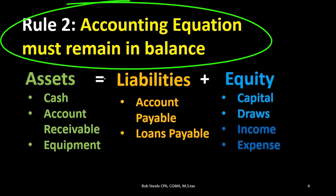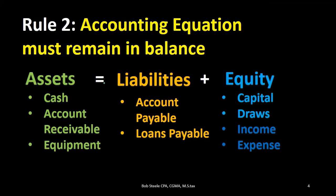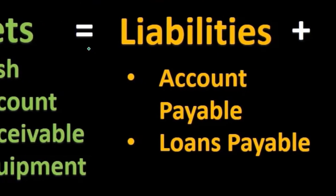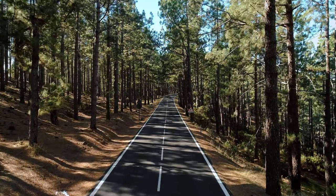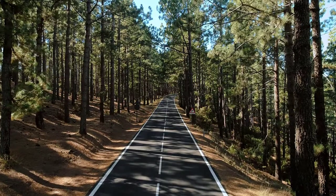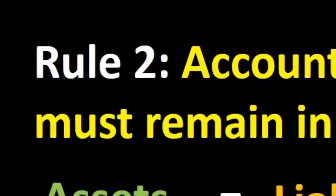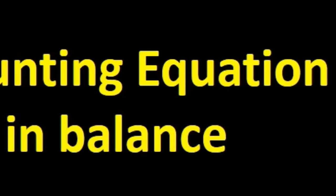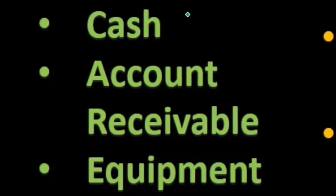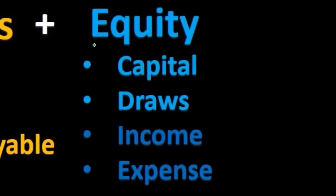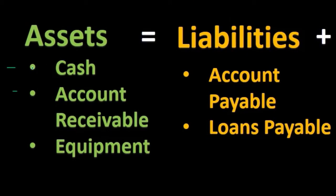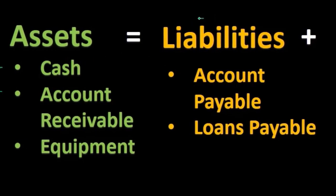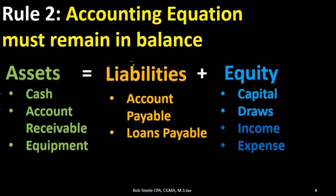Rule number two: the accounting equation must remain in balance. The accounting equation is assets equal liabilities plus equity, and we need to record the journal entry in such a way that the equation remains in balance. That means at least two accounts must be affected. If something happens to one account, something must happen to another. For example, if assets go up, then liabilities could go up, equity could go up, or another asset could go down — meaning two accounts would be affected on one or both sides of the equal sign.